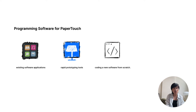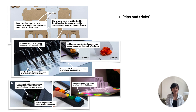Paper Touch systems function by triggering touch events on touch screen devices. This means different paper mechanisms can interact with a wide range of software platforms, like existing software applications, rapid prototyping tools, and coding new software from scratch. The switches of Paper Touch may seem simple, but working with paper's complexity was a real challenge for us. So in the paper, we annotate all the figures, providing design tips and tricks we discovered during the material exploration to make it easy for others to understand and replicate.